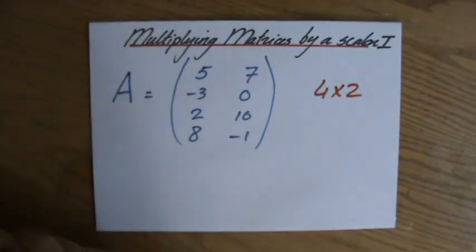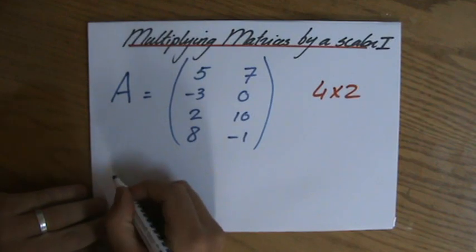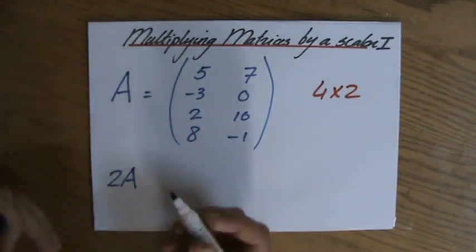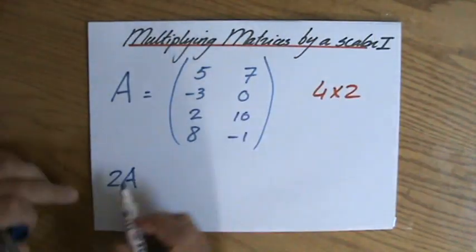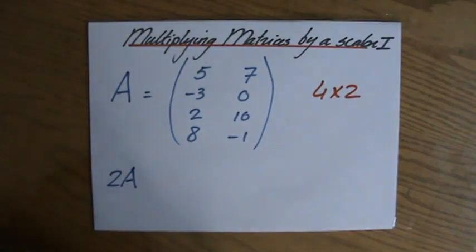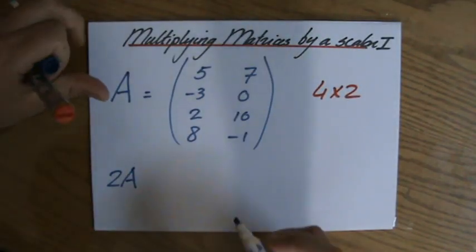Anyway if I have the matrix A and then the question is how much is 2A? So I multiply by the scalar 2, I scale it up twice, twice as big if you like. Well how do I approach that?